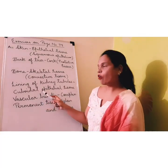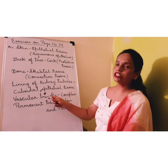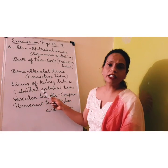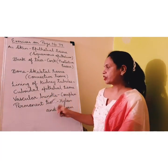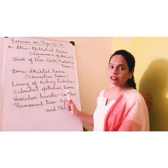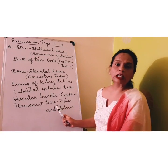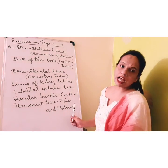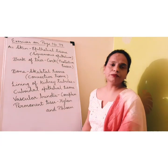Lining of kidney tubules, that is cuboidal epithelial tissue. Vascular bundles are the complex permanent tissue, which includes the xylem and the phloem.